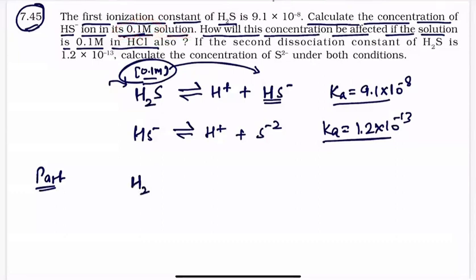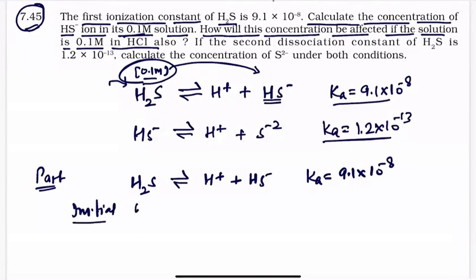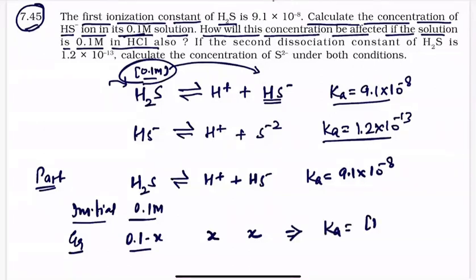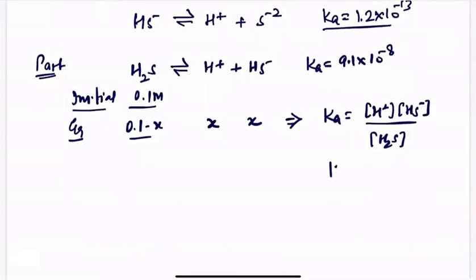When we have a 0.01 molar solution in simple water, you know that H₂S is going to dissociate to give H⁺ ion and HS⁻ ion, and Ka for this is 9.1 × 10⁻⁸. So initially, the concentration of H₂S is 0.1 molar. At equilibrium, H⁺ concentration will be x and HS⁻ will be x. So Ka will equal concentration of H⁺ × concentration of HS⁻ divided by concentration of H₂S. Ka value is 9.1 × 10⁻⁸.